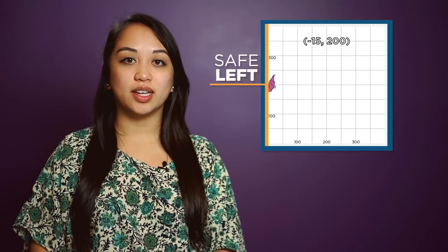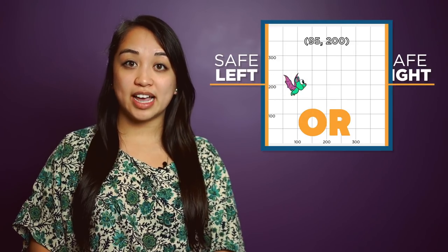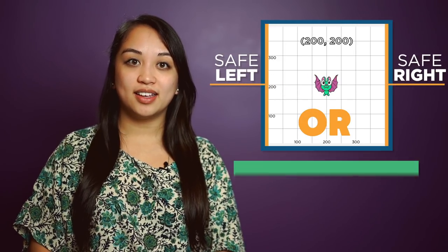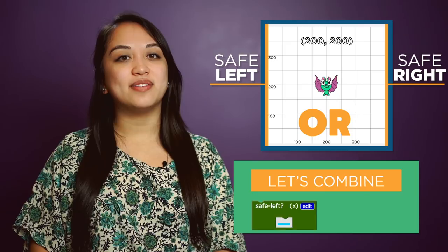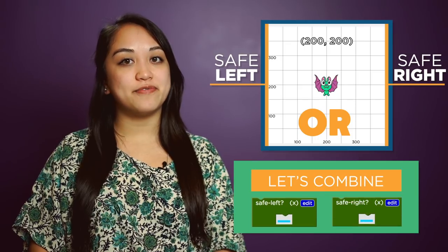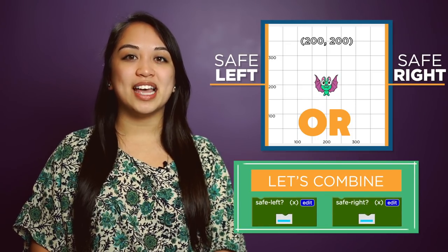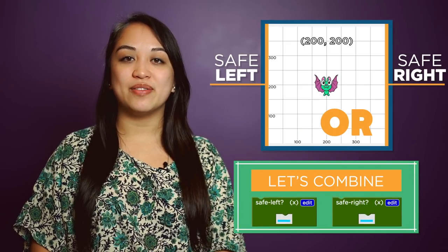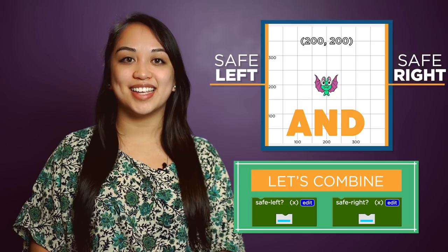Sam the Bat is safe from leaving the left side of the screen or from leaving the right side of the screen. Let's combine the safe left and safe right functions so that we can keep Sam safe from leaving the left and the right sides.